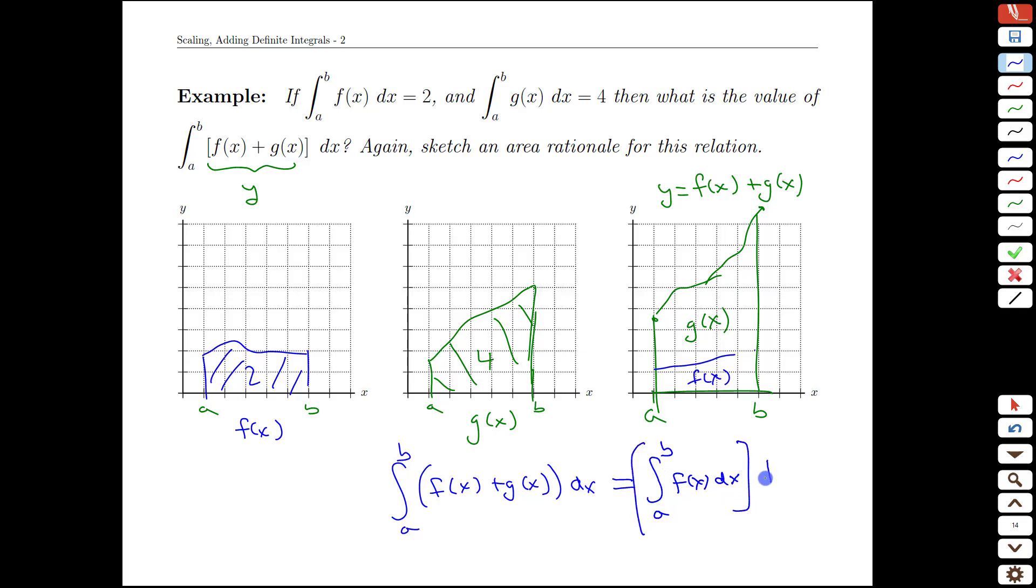And then we can add the area under the g graph, like so, and we can just add them separately. In this case here would give us 2 plus 4 equals 6.